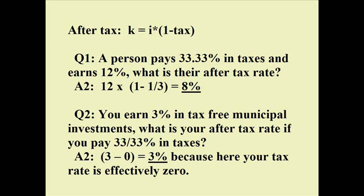Let's move on to taxes. The world we live in is after-tax. Suppose we're in the one-third (33.33%) tax bracket — federal and state income tax combined — and we earn 12%. We pay one-third and keep two-thirds, so we would get 8%.